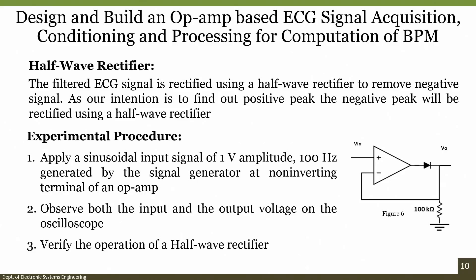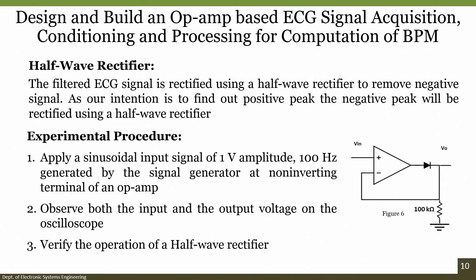Now let us understand the half-wave rectifier. The filtered signal is rectified using a half-wave rectifier to remove the negative signals. We do not require negative signals as our intention is only to find the positive peak; the negative peak will be removed using the half-wave rectifier. For the experimental procedure: apply a sine wave input signal of 1 volt at 100 hertz from the signal generator at the non-inverting terminal. Observe both input and output voltages on the oscilloscope and verify the operation of the half-wave rectifier.